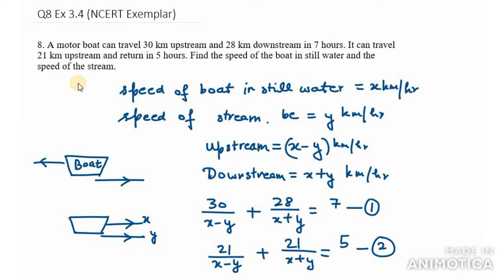Hello everyone, let's start with question number 8 of exercise 3.4. In this it is given that a motorboat can travel 30 km upstream and 28 km downstream in 7 hours. So from this we can make one equation.